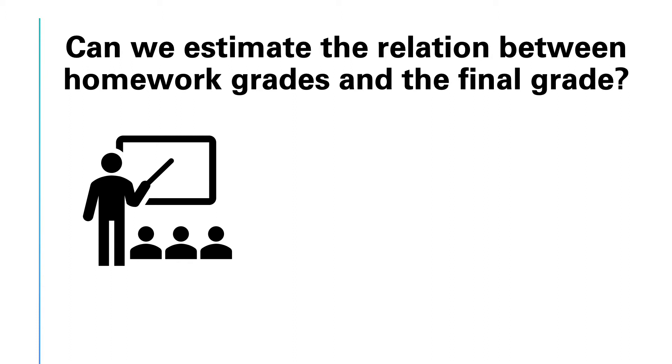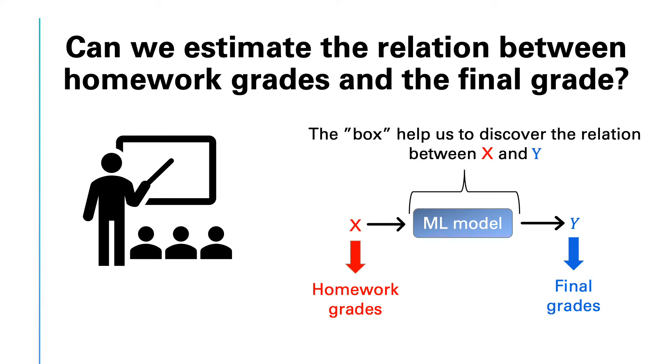This follows the general idea about supervised learning in which we have some input variable x and we want to predict or estimate an unknown variable y. In this case, the input variable is the average homework grades and the output variable y is the final grade, and our machine learning box helps the professor to discover the relationship between x and y.